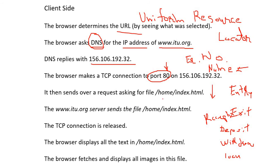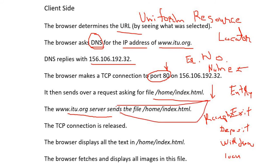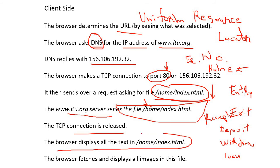Then the client sends a request asking for file home/index.html — that is the first request the client is asking. When this request goes to the server, the server sends that particular file as a response. The TCP connection is then released and the browser displays that particular page. Whenever the client gets a response, the client can view that file in their browser — like the homepage in Chrome.